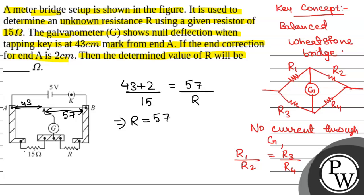So from here, R will be equal to 57 into 15 by 45, so that will be equal to 19 ohm. So the correct answer will be 19 ohm.